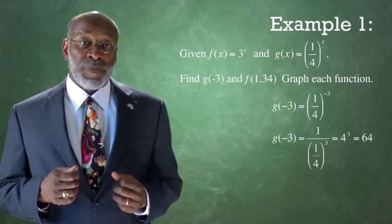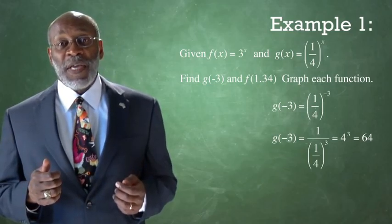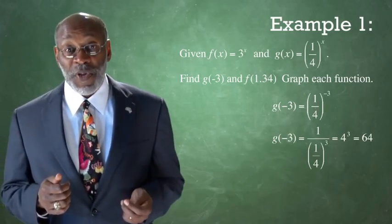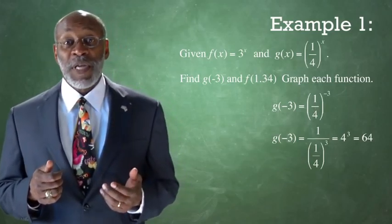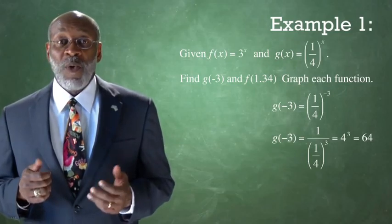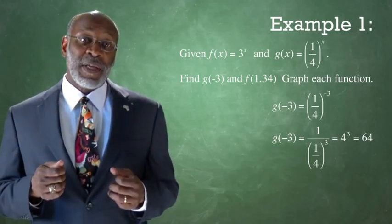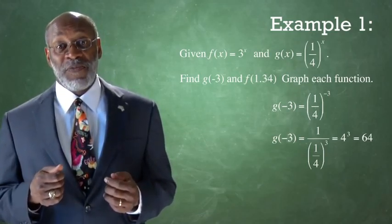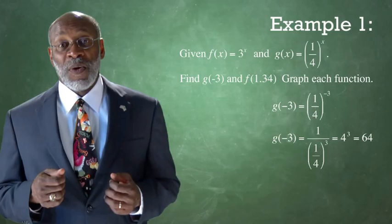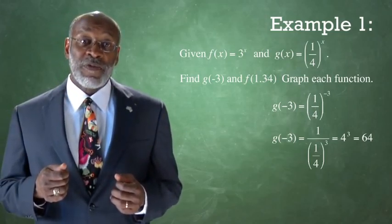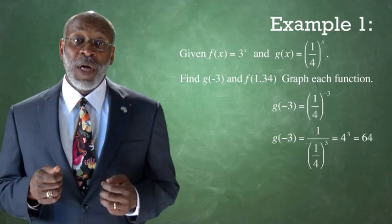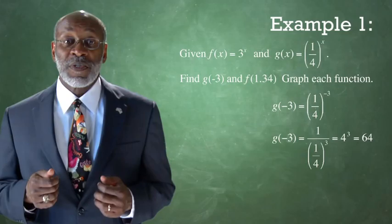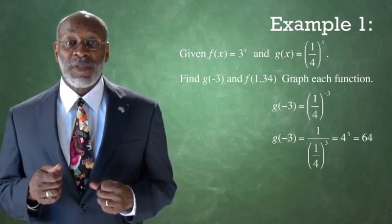Solution. Since g of x equals 1 fourth raised to the power x, then g of negative 3 is 1 fourth raised to the power negative 3. Now, 1 fourth raised to the power negative 3 equals 1 over 1 fourth raised to the power positive 3, which equals 4 raised to the power 3, which equals 64.